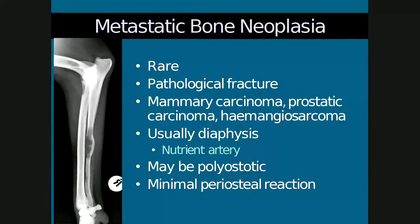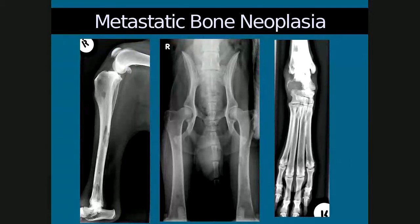Metastatic bone neoplasia can also occur, though it is quite rare. The most common tumor types that cause it are mammary carcinomas, prostatic carcinomas, or hemangiosarcomas, although osteosarcoma can also metastasize and lymphoma can affect bone. Metastatic lesions are usually diaphyseal because cancer cells metastasizing via the blood enter the nutrient artery. Lesions can be polyostotic — affecting many bones — with generally minimal to no periosteal reaction. An example shows polyostotic involvement with multiple lytic areas in the tibia, both femurs, and tarsal bones.